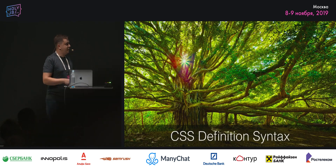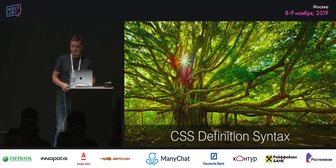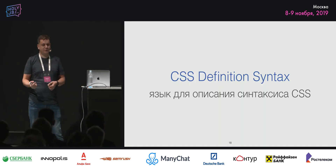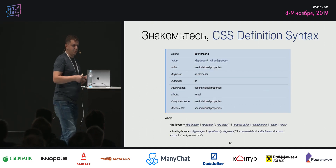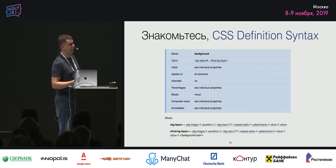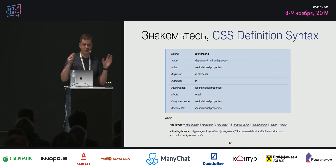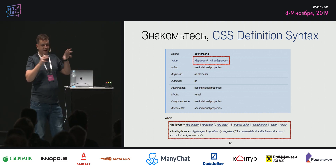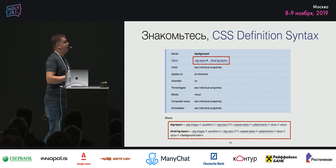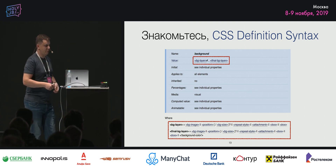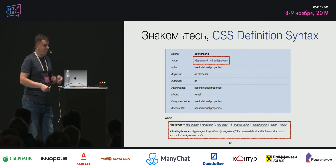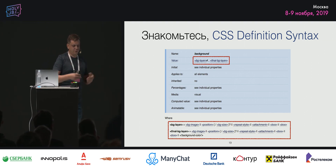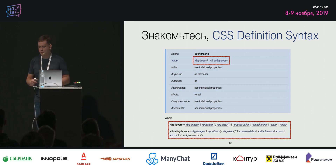Источником правды является CSS definition syntax. CSS definition syntax — это язык для описания синтаксиса CSS. Если открыть любую спецификацию по CSS, там есть таблички описания свойств и описание value — вот это и есть CSS definition syntax. Там есть такие определения, как BGLR, и ниже под табличками обычно эти синтаксисы разворачиваются дальше и дальше.